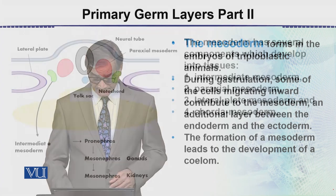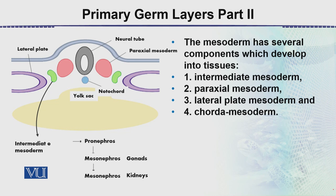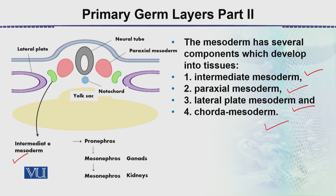The coelom is a cavity lined by the mesoderm. In this diagram, we can see the structures which are derived from the mesoderm. The neural tube is ectodermal, and this is the paraxial mesoderm. There are 3 to 4 types of mesodermal cells: intermediate mesoderm, paraxial mesoderm, lateral plate mesoderm, and chordal mesoderm.